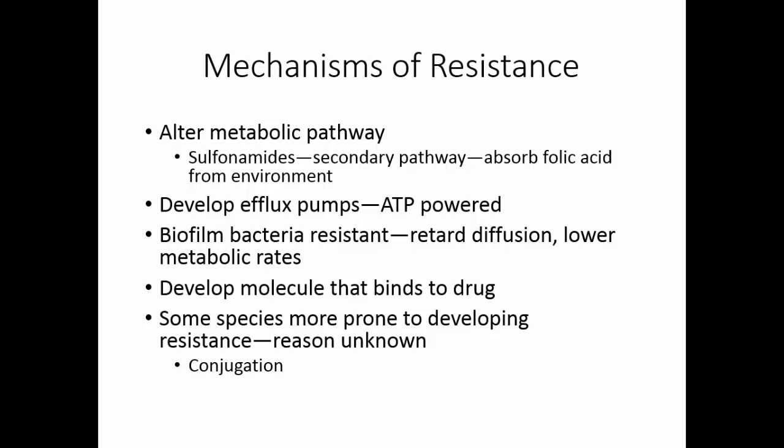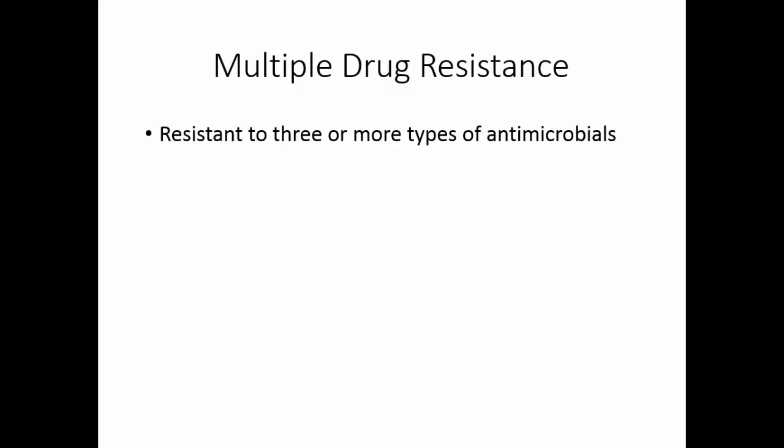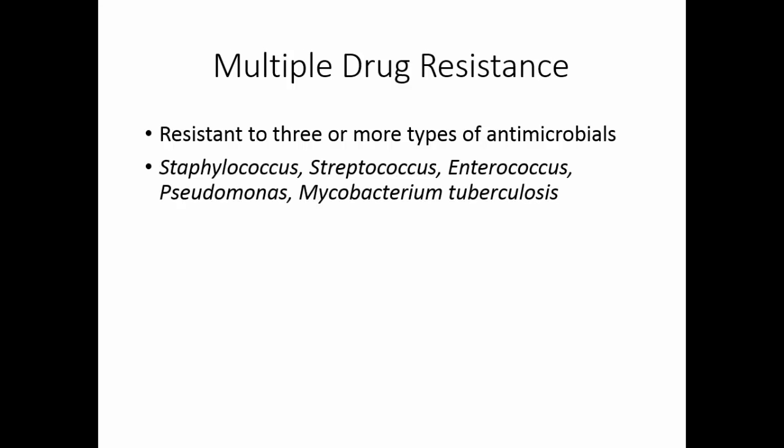Perhaps they have a higher rate of conjugation, or since another way to get DNA into the cell is through transformation, perhaps these are simply highly competent cells. Multiple drug resistance occurs when an organism is resistant to three or more types of antimicrobial agents.